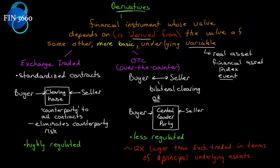Derivatives can be exchange-traded or over-the-counter. Exchange-traded contracts are standardized; OTC can be standardized but allows for a lot of customization not found on exchanges. On exchange-traded markets, a buyer and seller come together to form a contract through a clearinghouse, so the clearinghouse is the counterparty to all contracts — the buyer enters a contract with the clearinghouse, and so does the seller.